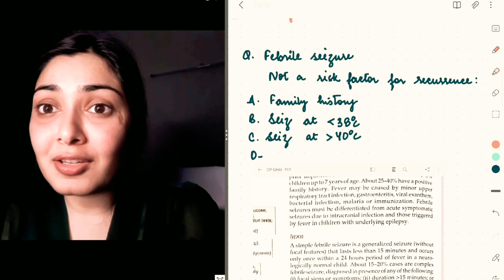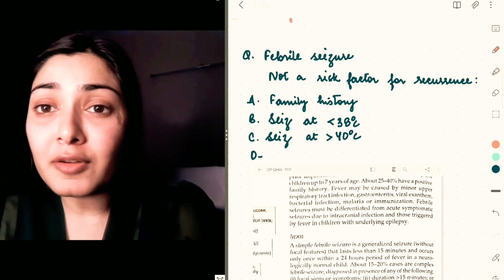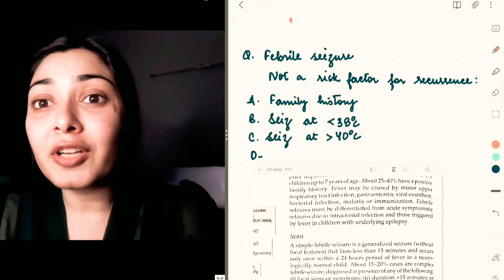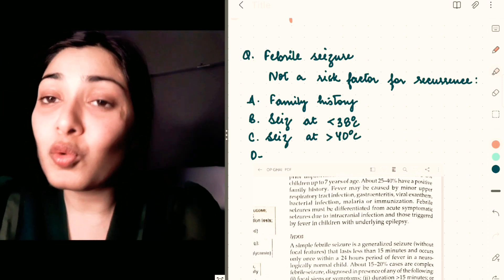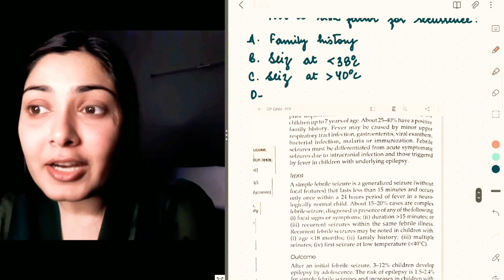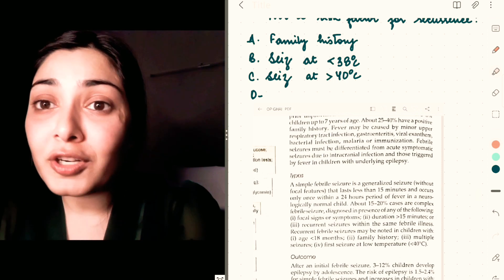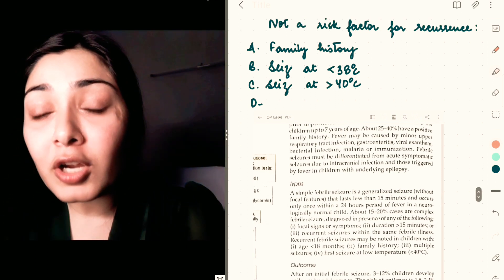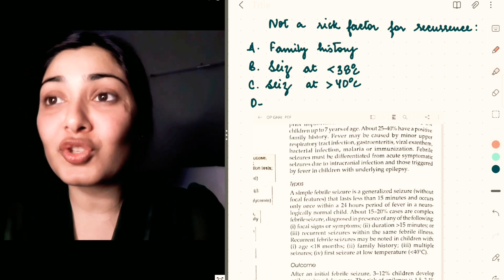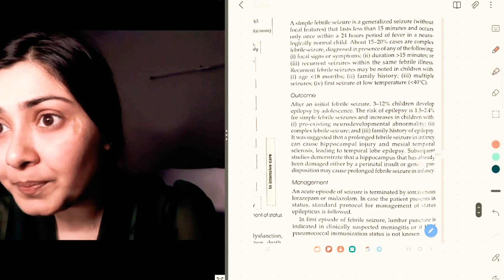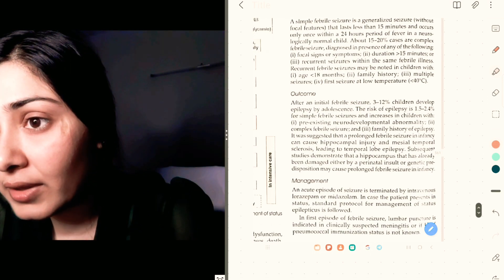Family history is definitely a risk factor for recurrence. Seizure at a lower temperature, that is less than 38 degrees Celsius, is again a risk factor. Seizure at higher temperatures is normal. The higher the temperature, the more chances of getting a seizure. But per se, seizure at higher temperature is not a risk factor for recurrence. In fact, if you are getting seizure at a lower temperature, that is a risk factor.